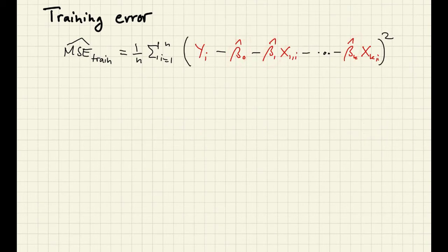The training error measures prediction error in that it looks at differences between observed y and predicted y. However, we're here computing the prediction rule and the predictions on the same sample, and in a second we'll see that that is a problem.